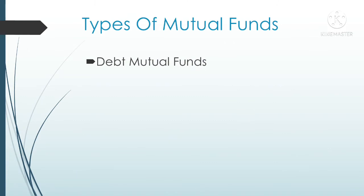Now let's see debt mutual funds. These are funds whose money is invested in debt instruments like bonds and government securities. The next type is hybrid mutual funds, also known as balanced mutual funds — these are a combination of debt and equity, where mostly 60% of the money is invested in equity and the remaining 40% in debt instruments.